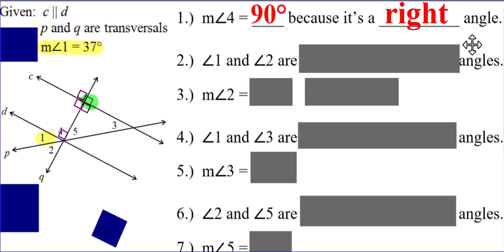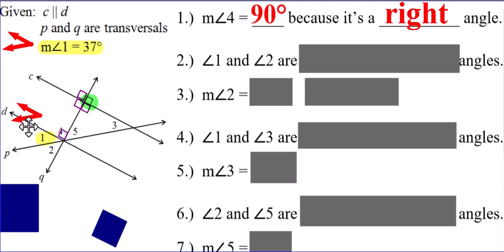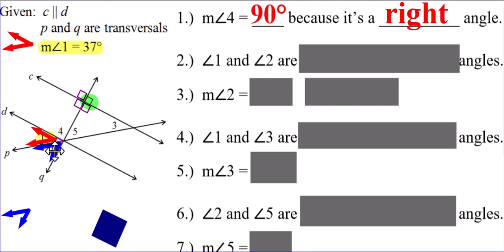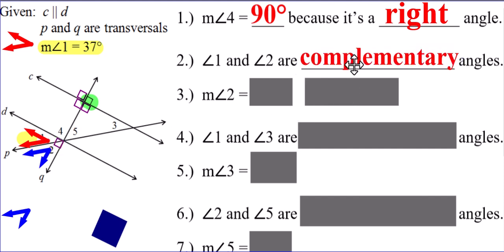Next problem: angle one and angle two are a pair of what kind of angles? Angle one — check it out, it is like this. Angle two — I don't have any evidence that angle two is going to be the same measure as angle one. But remember the right angle tricks. If this guy here, angle four, is a right angle and it's along a straight line, then this is also a right angle where angles one and angle two happen to meet. So angles one and two together form a right angle. What do we call a pair of angles that make a right angle? We call them a pair of complementary angles.